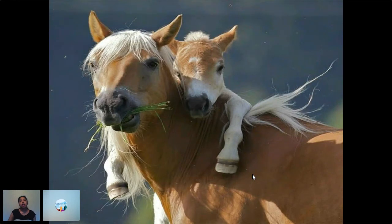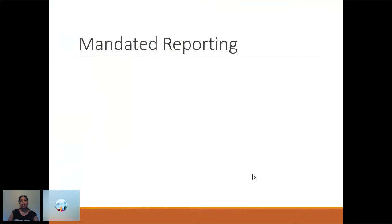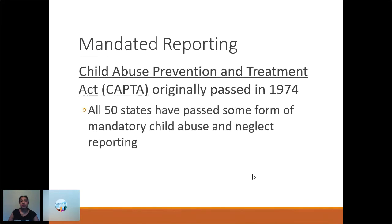Now we're going to talk about mandated reporting. Every state in the U.S. has mandated reporting, and most countries in the world do as well. The reason the United States has mandated reporting is because of the Child Abuse Prevention and Treatment Act, or CAPTA, originally passed in 1974. Basically, it says all states need to come up with some way to gather reports and investigate any concerns for child maltreatment. Every time it's come up for renewal, the government has said yes, we're going to continue because we know it's in the best interest of children.